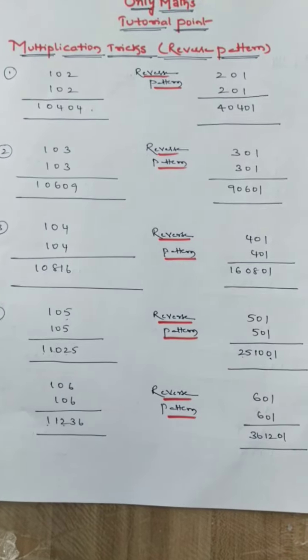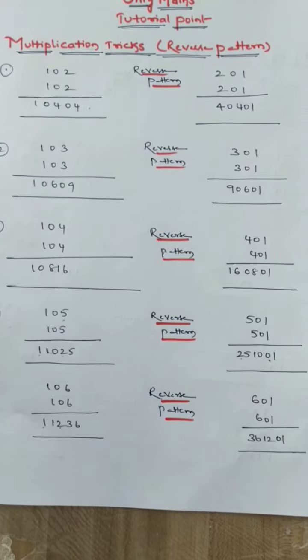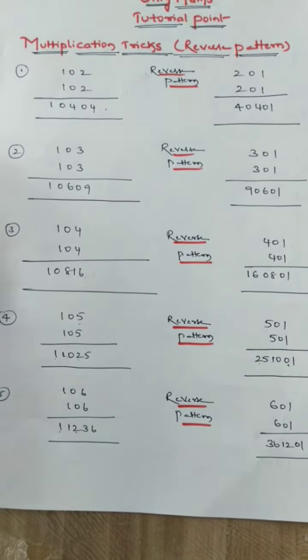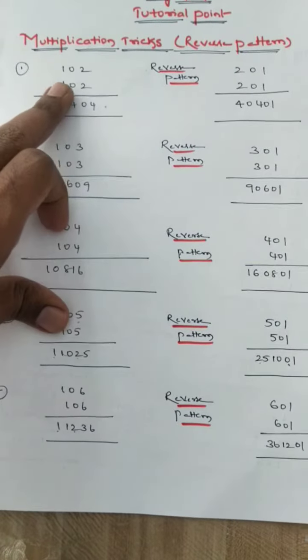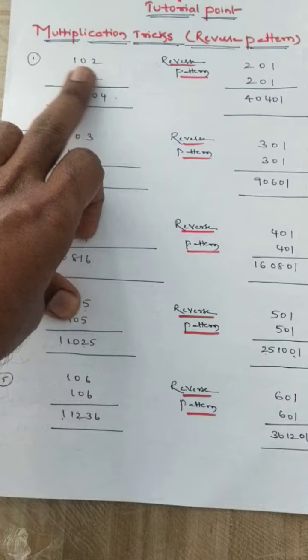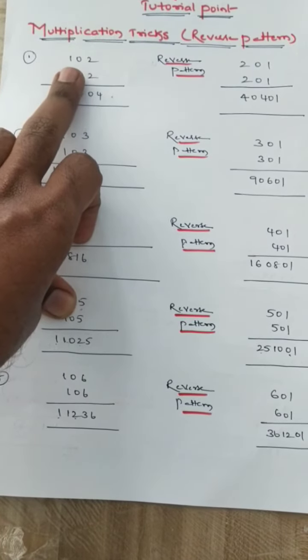Hi students, welcome to Only Maths Tutorial Point. Today we are going to discuss multiplication tricks of reverse pattern. Here I have given number 102. I am multiplying 102 into 102, nothing but square of the number 102.